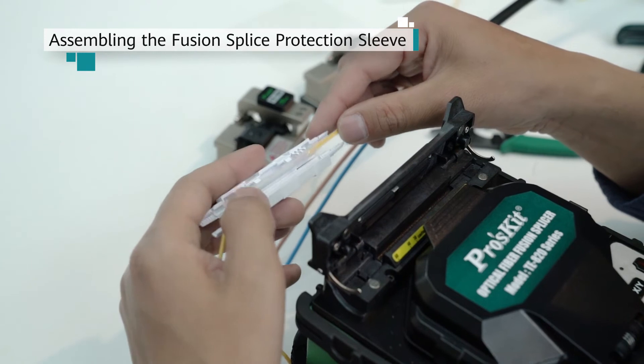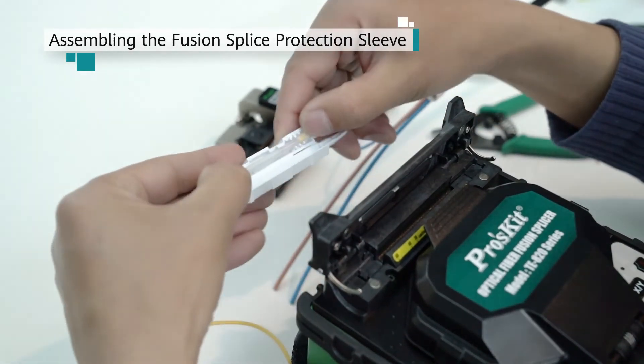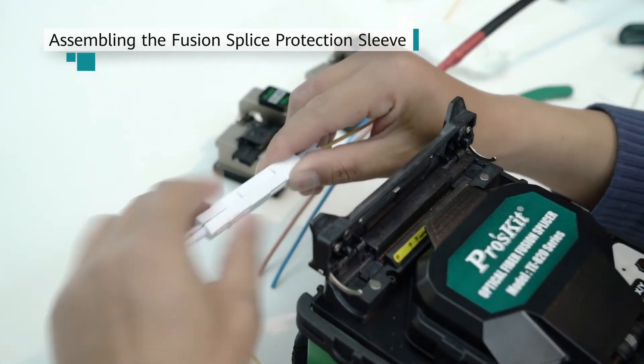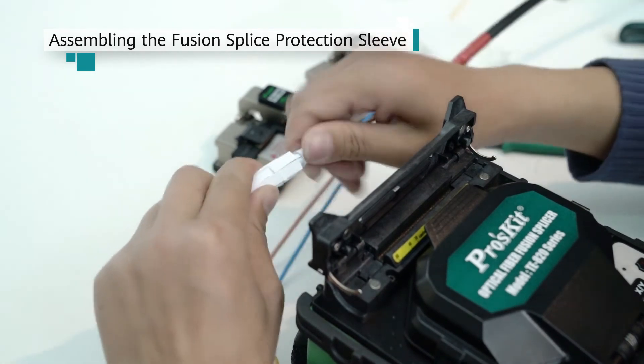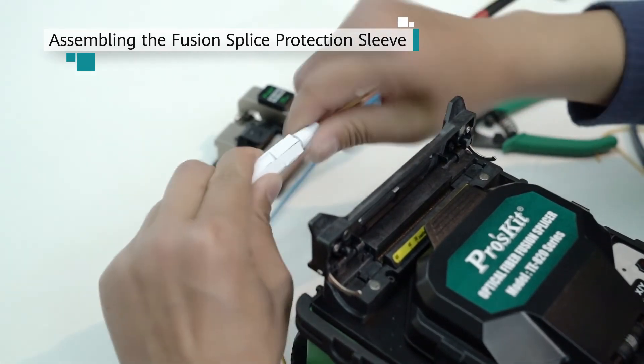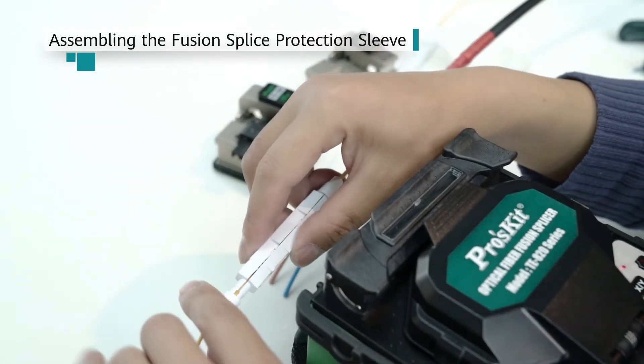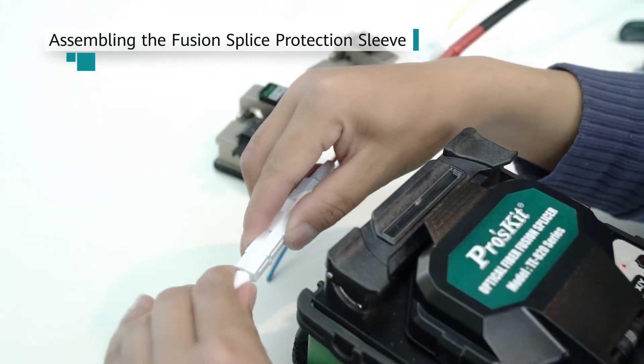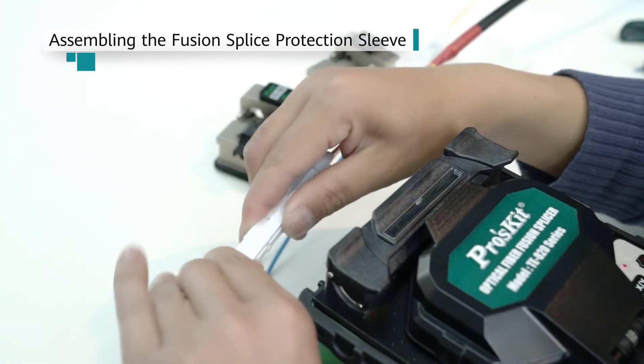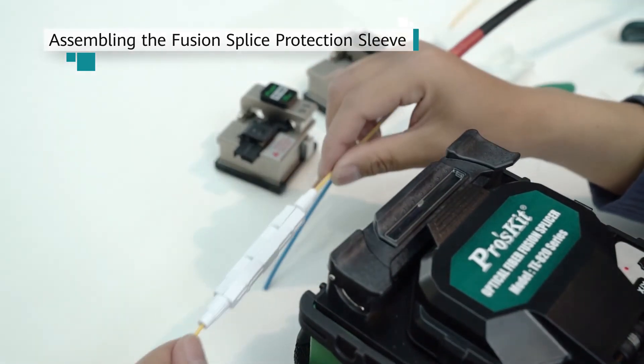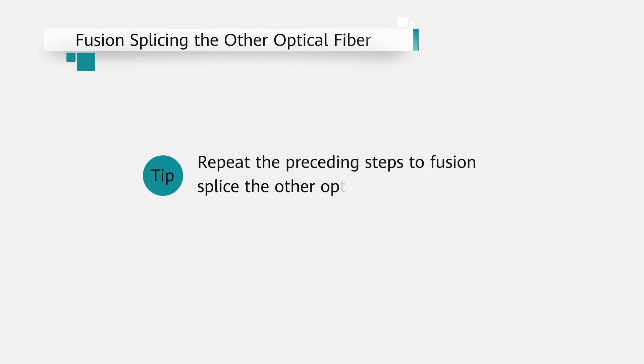Place the spliced optical fiber into the fusion splice protection sleeve and tighten the caps at both ends. Repeat the preceding steps to fusion splice the other optical fiber.